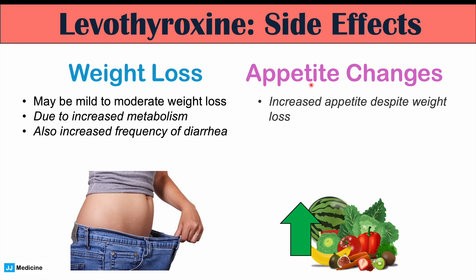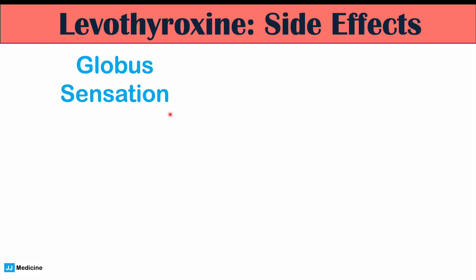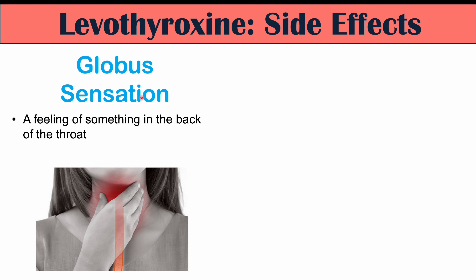Appetite changes can also occur — patients can actually have an increased appetite despite weight loss, due to increased metabolism. A globus sensation may also occur, where you feel like there's something in the back of your throat when there really isn't. This may be related to changes in thyroid activity, since exogenous thyroid hormone reduces the need for the thyroid gland to produce as much hormone itself.